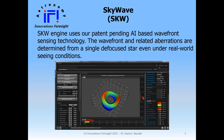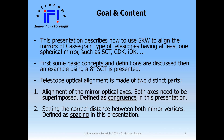Our SkyWave software for alignment, also known as collimation of telescopes, uses our patent-pending AI-based wavefront sensing technology. The wavefront and related aberrations are determined from a single defocus star even under real-world seeing-limited conditions. This presentation covers Cassegrain-type telescopes having at least one spherical mirror — the primary, the secondary, or even both — and we'll go through an example using an 8-inch Schmidt-Cassegrain.